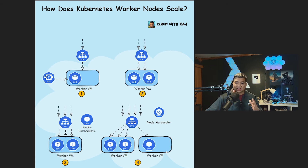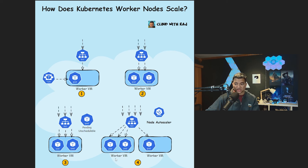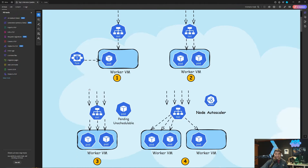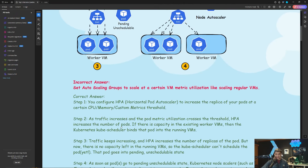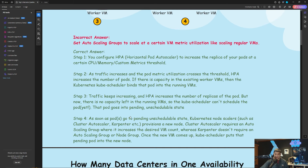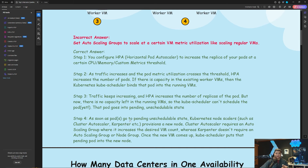Whenever you need to scale Kubernetes worker nodes, you do not create autoscaling groups and scale at a certain CPU or memory level for the worker VM. Kubernetes worker nodes do not scale like traditional virtual machines. If you want the incorrect and correct answers with full explanation in a nice PDF format, click the link in the description — you can download it free of charge.